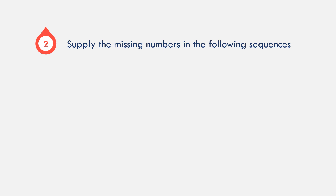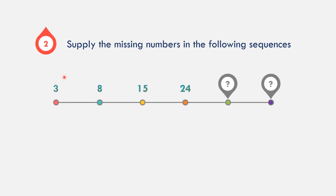In example number 2, let us find the missing numbers in the following sequence: 3, 8, 15, and 24. Let us see what could be the pattern. From 3 to 8, we add 5.